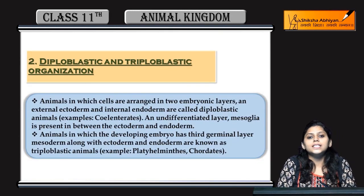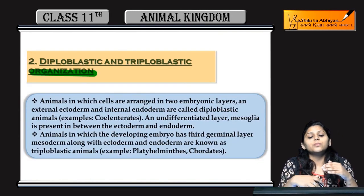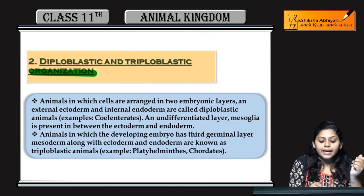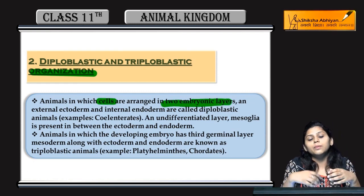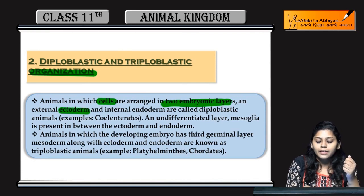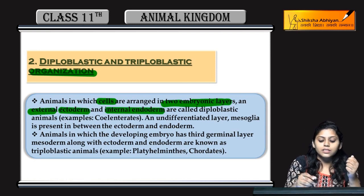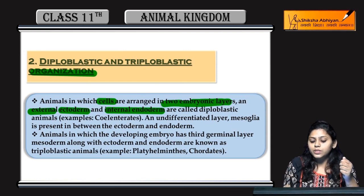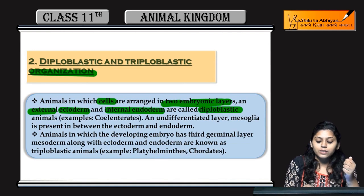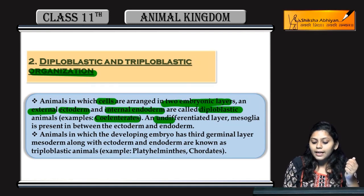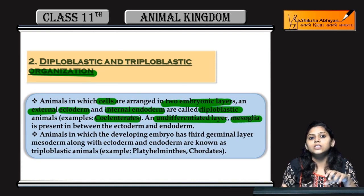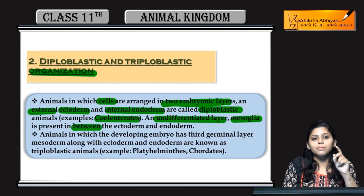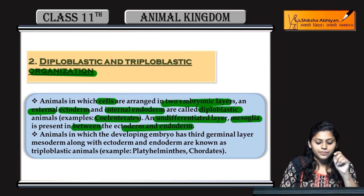Next topic is diploblastic and triploblastic organization. Jab embryonic development ho rahi hoti hai, tab cells arrange hoti hai kuch layers mein. Agar animals mein cells ki arrangement two embryonic layers mein hoti hai — ectoderm and endoderm — ectoderm is external and endoderm is internal layer, use diploblastic animals kahenge. Inme coelenterates aate hain, aur ek undifferentiated layer mesoglea present hoti hai between ectoderm and endoderm.